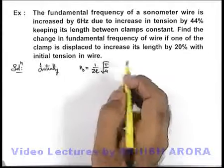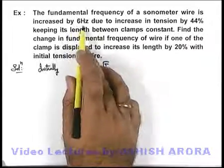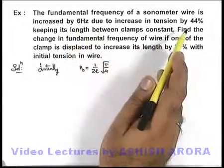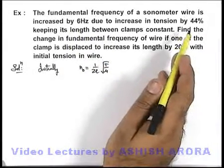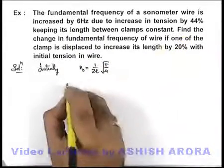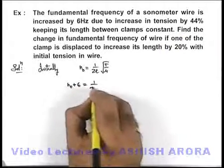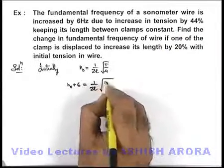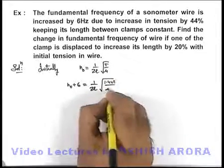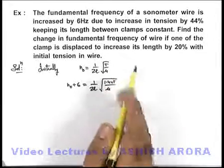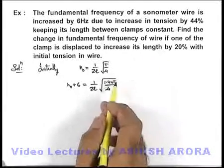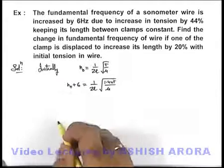That is saying the frequency increases by 6 hertz if tension is changed by 44 percent. So we can write: n₀ + 6 equals 1 by 2L root of 1.44T by mu. After increase in tension by 44 percent, the frequency will increase by 6 hertz.